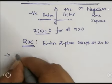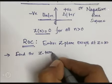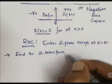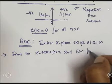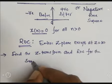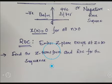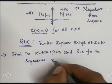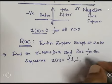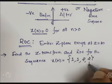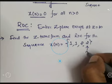I will take one example: find the Z-transform and ROC for the sequence x[n] equal to {1, 1, 2, 2} with an upward arrow mark here. As already told, the upward arrow mark indicates that that is the zero sample, meaning n equal to zero.